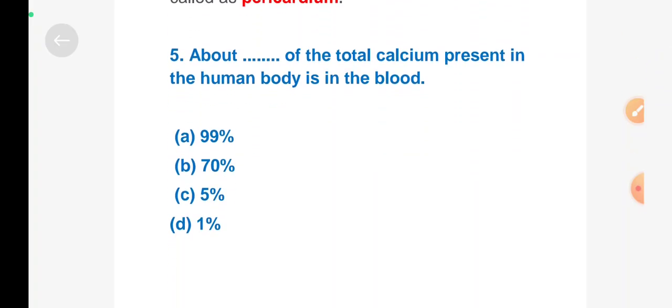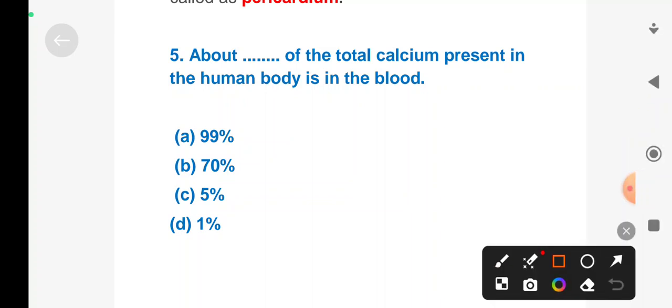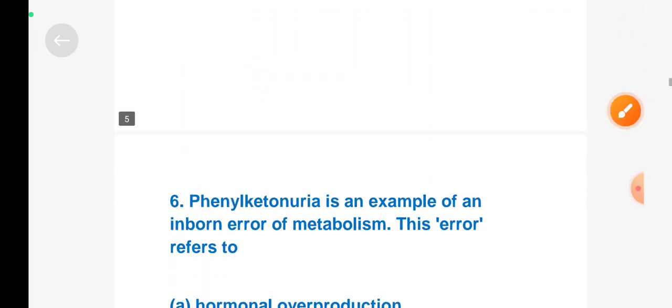Next question: what percentage of the total calcium present in the human body is in the bones? Option A: 99, Option B: 70, Option C: 5, Option D: 1. Right answer is Option A, 99%.